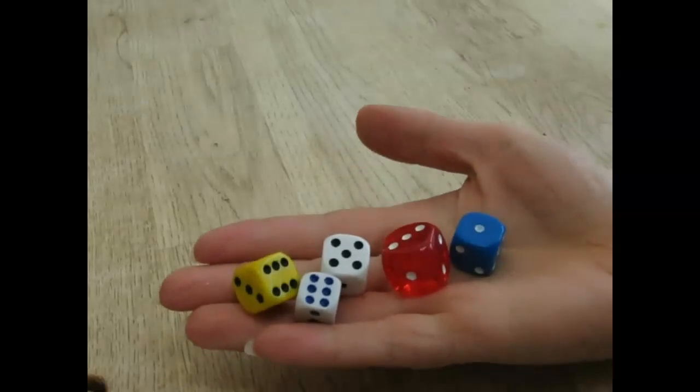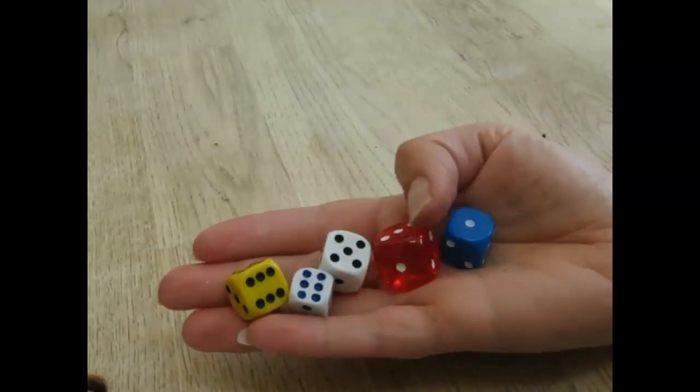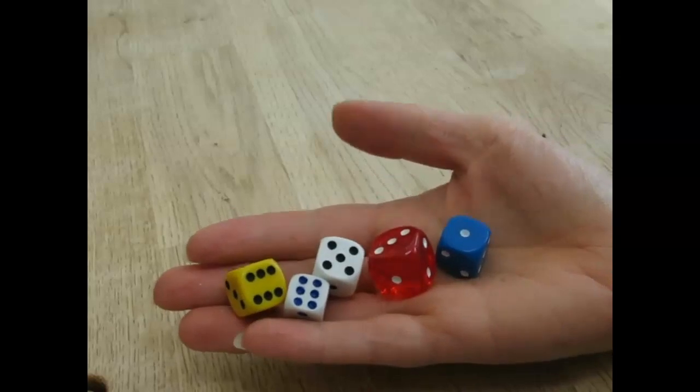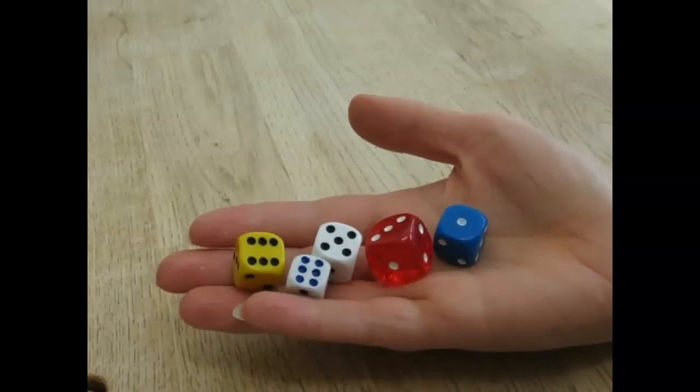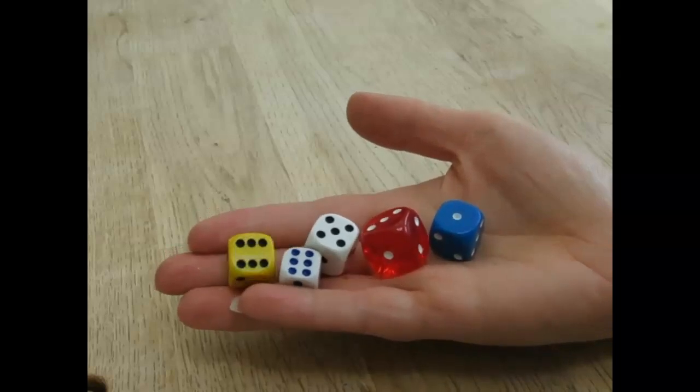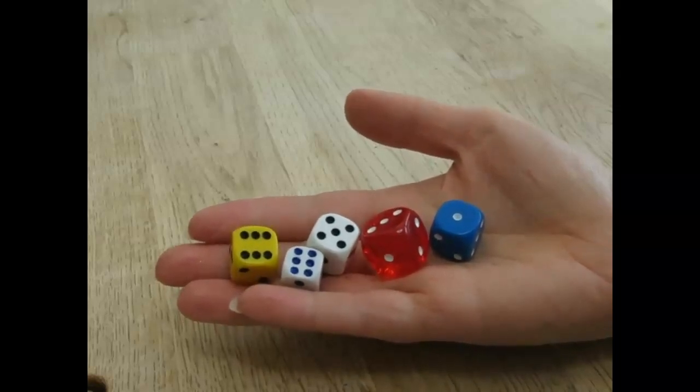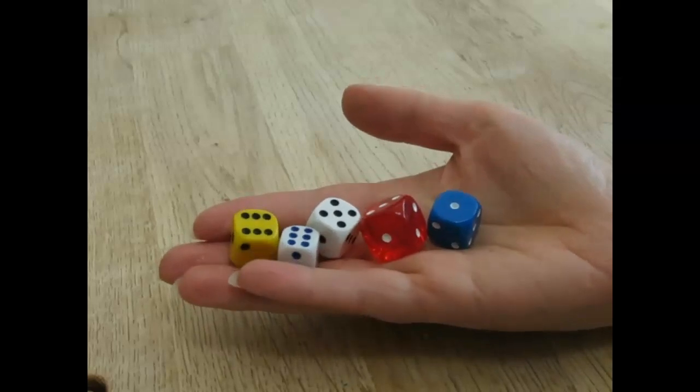For this game you need to go and find as many dotty dice as you can around the house. Five is about the perfect number but if you can't find that many it doesn't really matter and if you can find a few more then great. The idea is that you roll the dice and as quickly as you can you get all the dice showing the same amount.